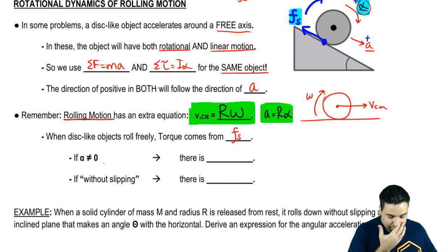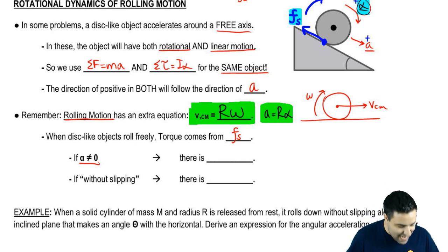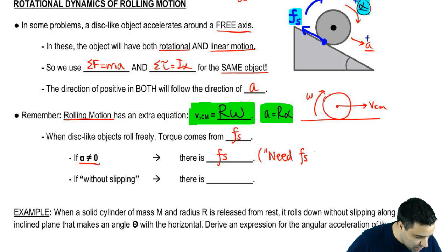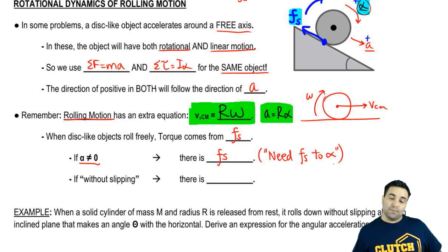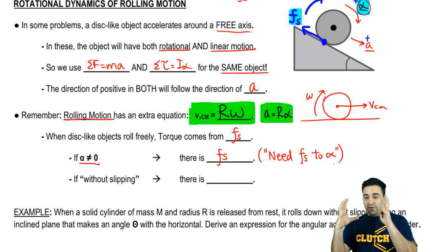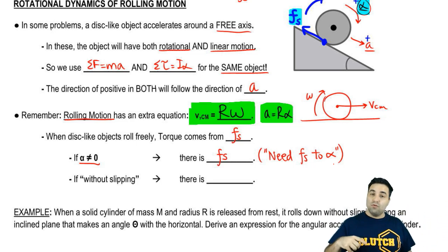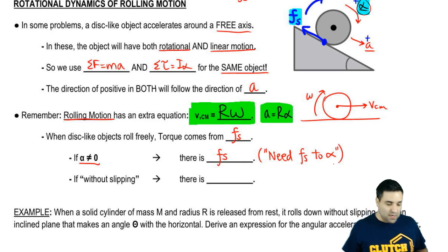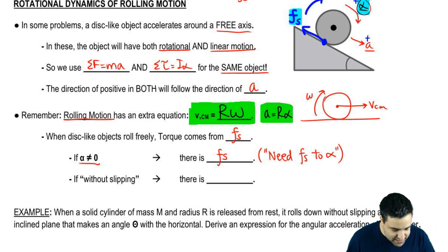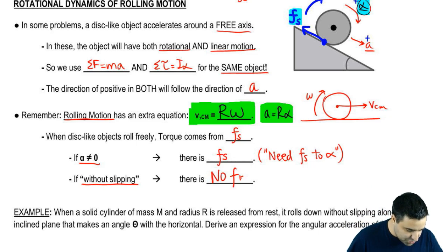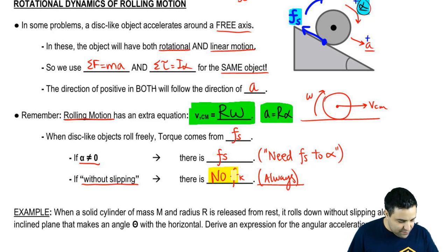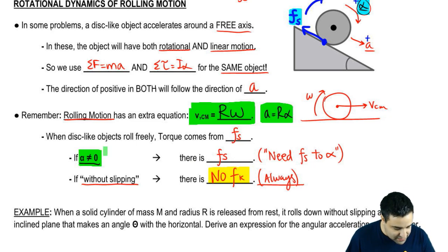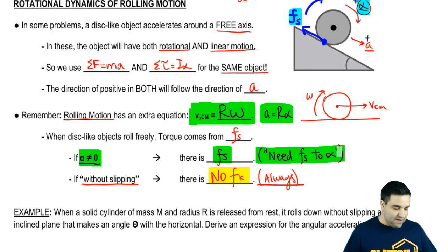Two things to remember: if there is an angular acceleration — if your alpha is not zero — there has to be static friction. I like to remember this with the phrase: you need static friction to alpha. If you don't have static friction, you don't have an alpha. If you're initially not spinning, you have no way of beginning to spin, and if you are already spinning, you have no way of stopping. The keyword 'without slipping' means there is no kinetic friction — and this is always going to be the case in these problems. If acceleration is not zero, there has to be static friction.